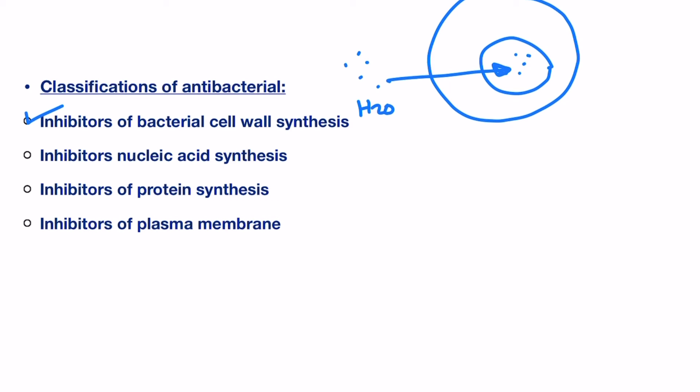Animal cells such as humans don't have a cell wall, and that makes it a perfect target for these antibacterial agents. Examples of this class include penicillin, cephalosporins, and vancomycin.